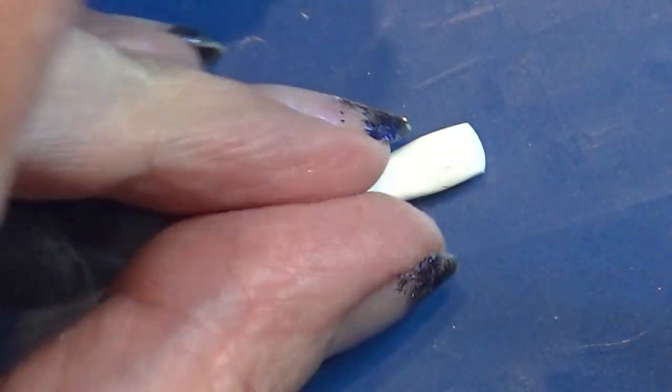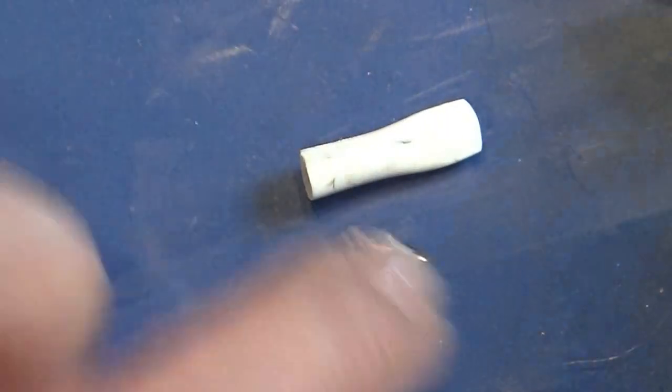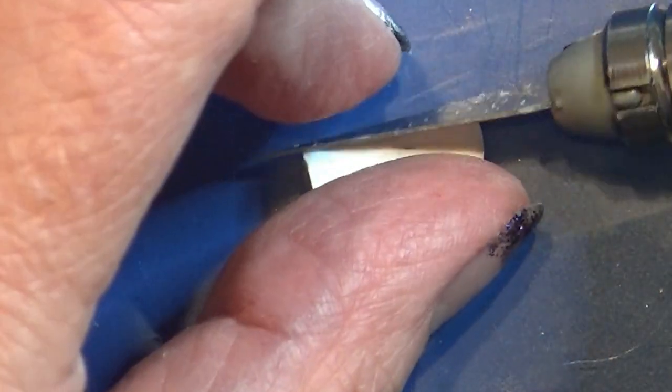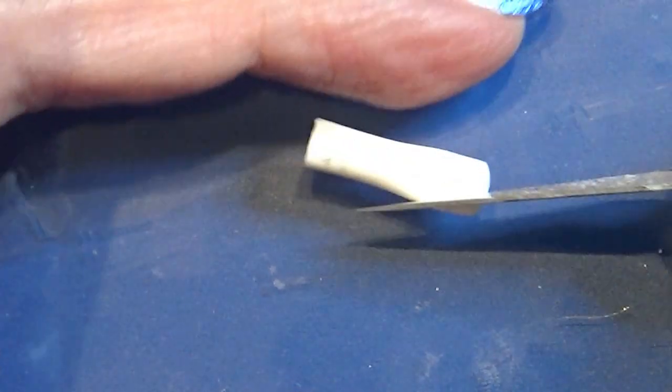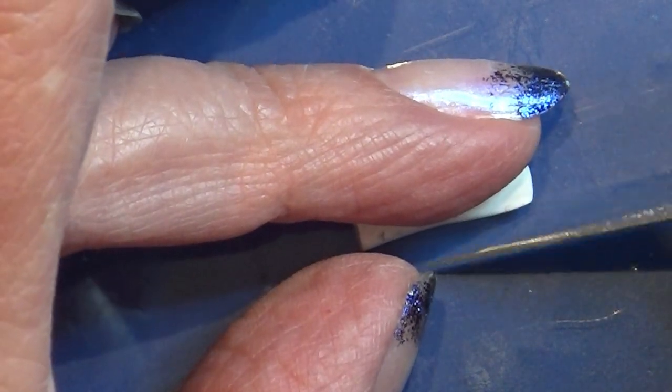I flatten out one end of this little tube and then I make sure that it's still the same width all the way down, otherwise it will look really weird.